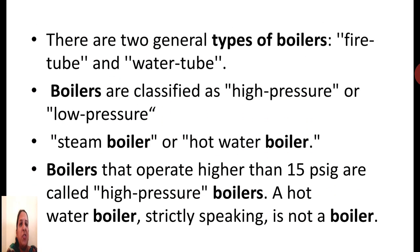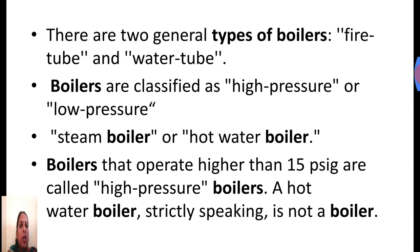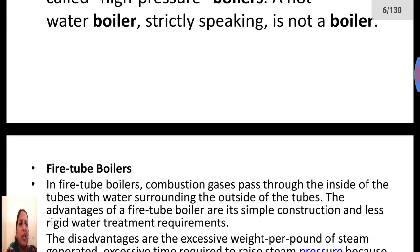We classify boilers based upon the mode of generating heat as well as based upon the pressures. The first classification is general types of boilers based upon the method of steam generation: fire tube boilers and water tube boilers. The second classification is based upon the pressure developed in the boilers: high pressure boilers and low pressure boilers. We also have steam boilers as well as hot water boilers.